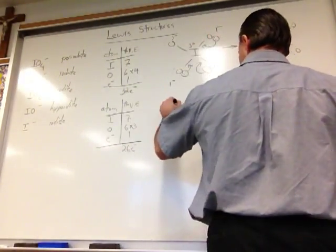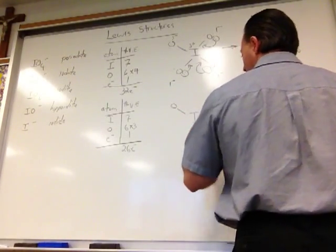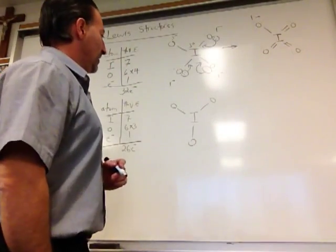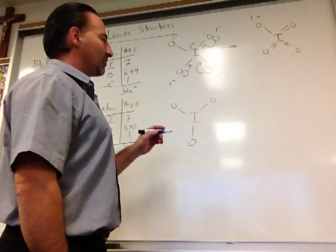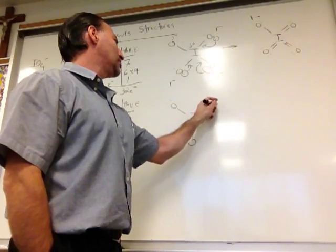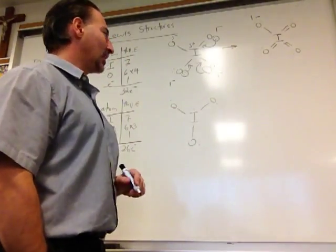We draw our preliminary structure. And that uses up 6 electrons, so we have 20 more to disperse. We'll disperse 18 on the oxygen atoms. Each one gets 6, and then the remaining 2 go on the central atom.